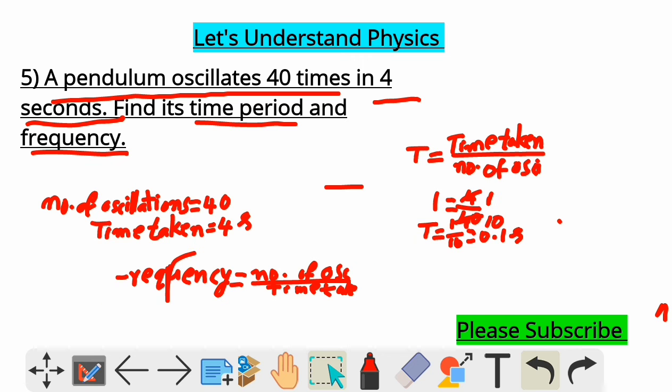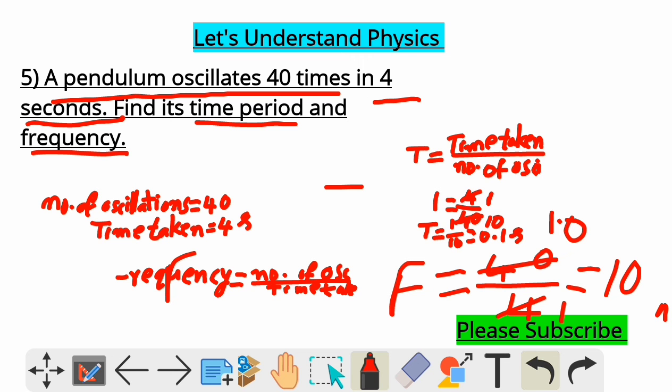For frequency, I am just writing F. F is equal to number of oscillations 40 by time taken is 4 seconds. So, 4 ones and 4 tens. What is the value you get? 10. Now, frequency is equal to what is the unit for frequency? Hertz. So, frequency is 10 Hertz.